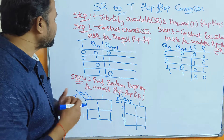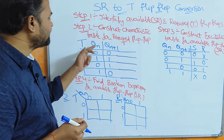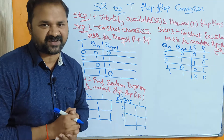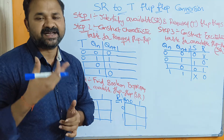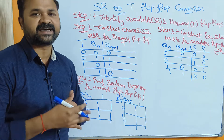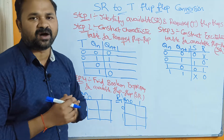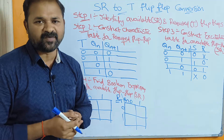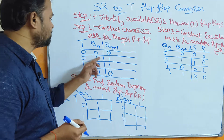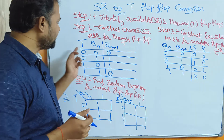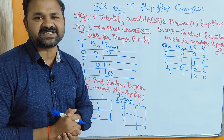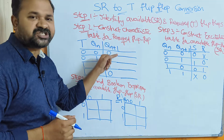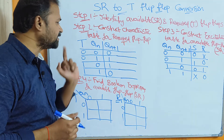For constructing the characteristic table, the inputs are T and Qn, and the output is Qn+1 — the next state output. Qn means current state output. Since we have 2 inputs, we have 2² = 4 combinations: 00, 01, 10, 11. T stands for toggle flip-flop. If T value is 0, then the next state output is similar to the current state output.